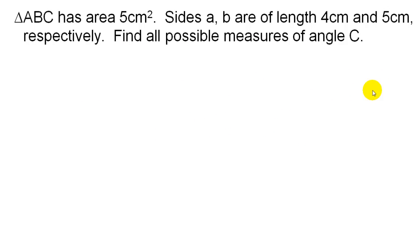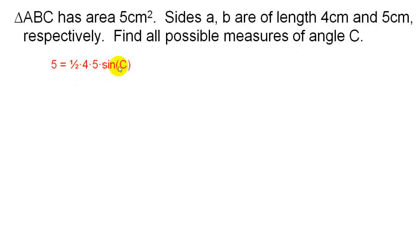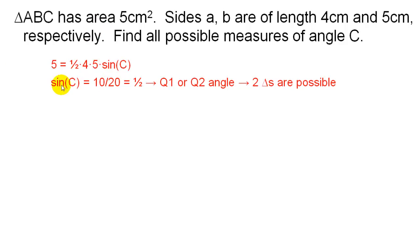Let's say we know the area of a triangle and we know two of its sides, but we want to find the measure of the angle between them. Here's a triangle with an area of 5 square centimeters, and two sides of length 4 and 5 centimeters. We can work backwards with the formula: 5 equals one-half times 4 times 5 times sine of the angle we're trying to find. Solving for sine C, we get sine C equals one-half. There are two angles with a sine of one-half: one in quadrant one, 30 degrees, and one in quadrant two, 180 minus 30, or 150 degrees.